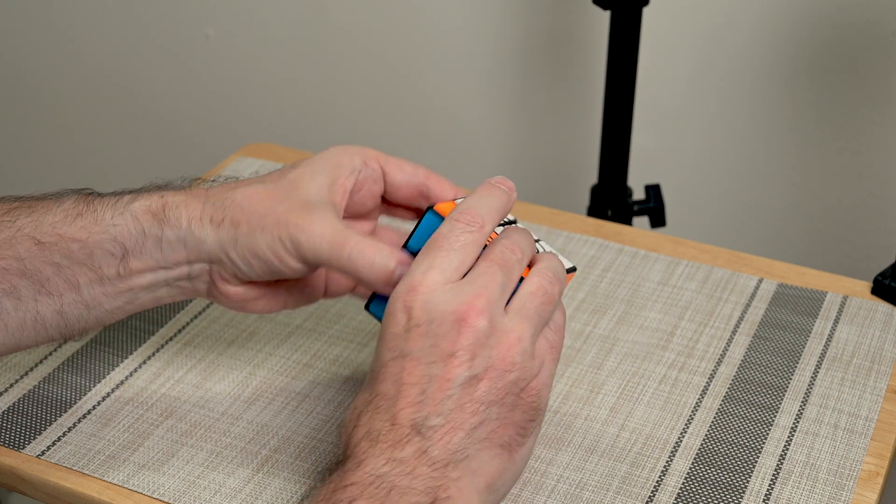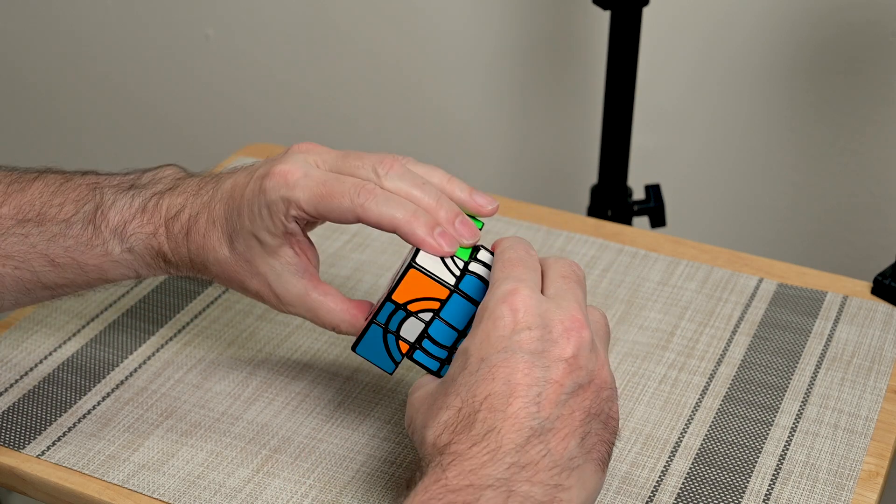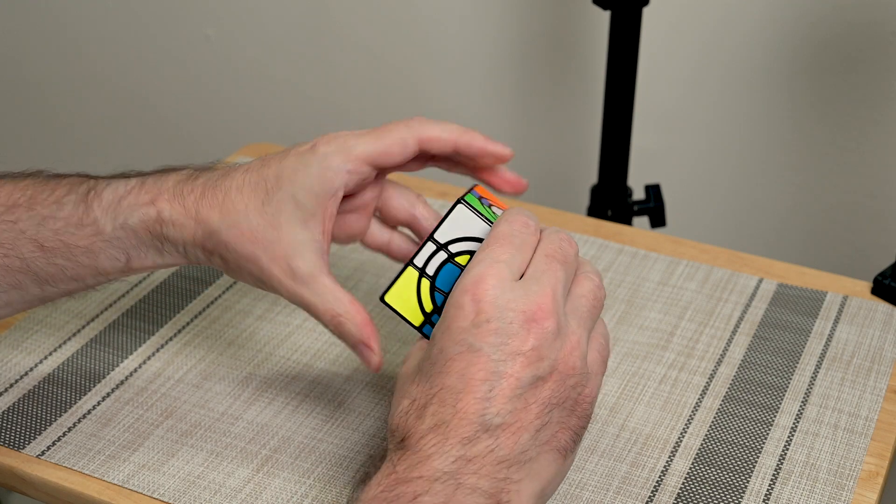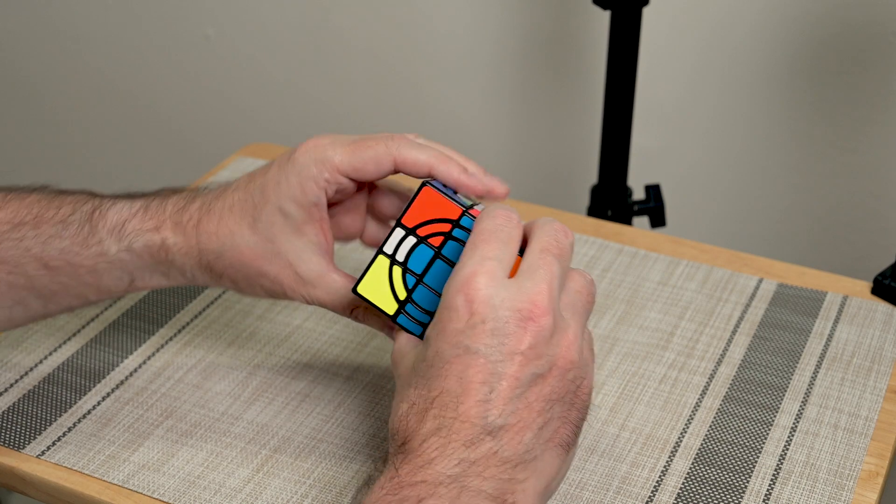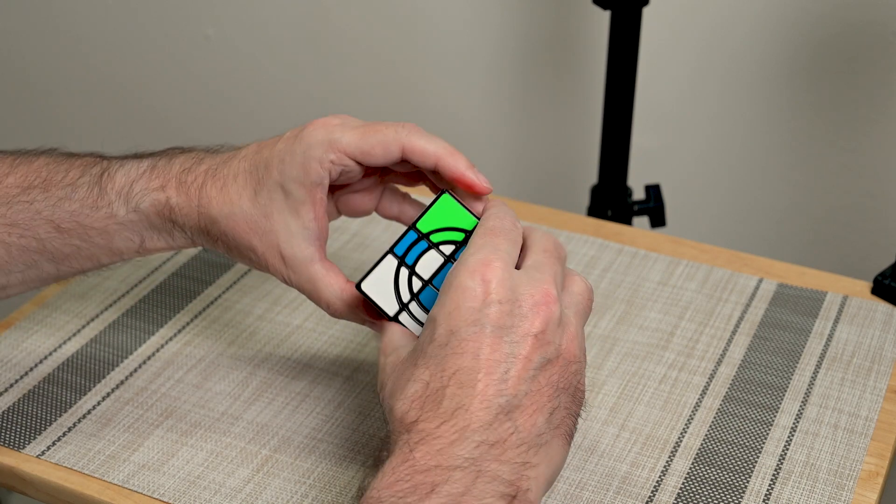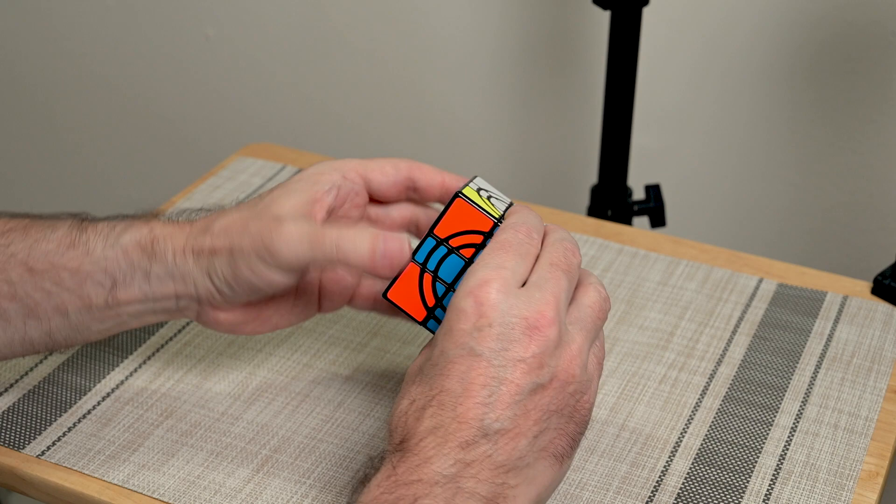And it kind of shows you the sorts of things that I would do to figure out a puzzle like this. Just to try and figure out what moves when you do certain things. So, I would do the down, down, up, up, down, down, up, up, down, down, down, up, up. Curious to see that. It did flip those around, but it also moved these other pieces. So, that's something that's kind of cool to figure out.